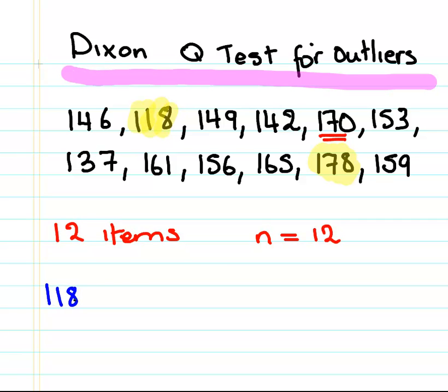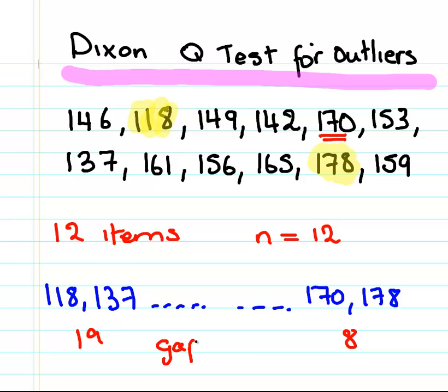So it might be handy there just to write it out: 118, 137, 170, 178. So that is a gap there of 19. That's a gap of 8, essentially the difference between the two numbers. We're interested in these gaps. That's how this test works, it works on the basis of those gaps.